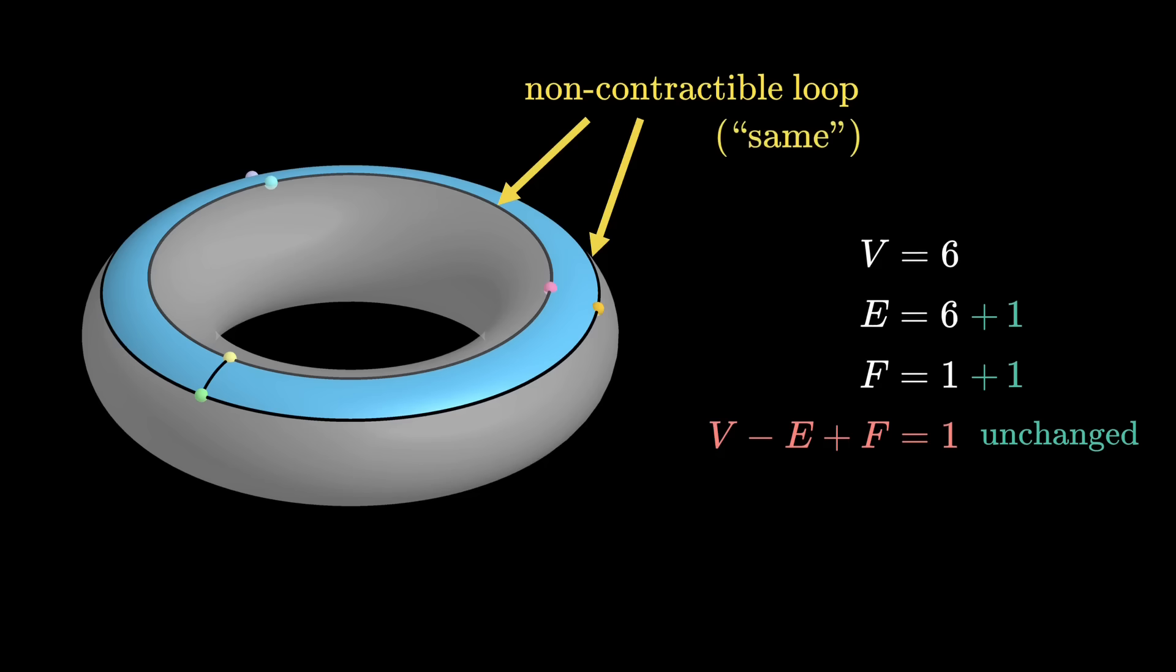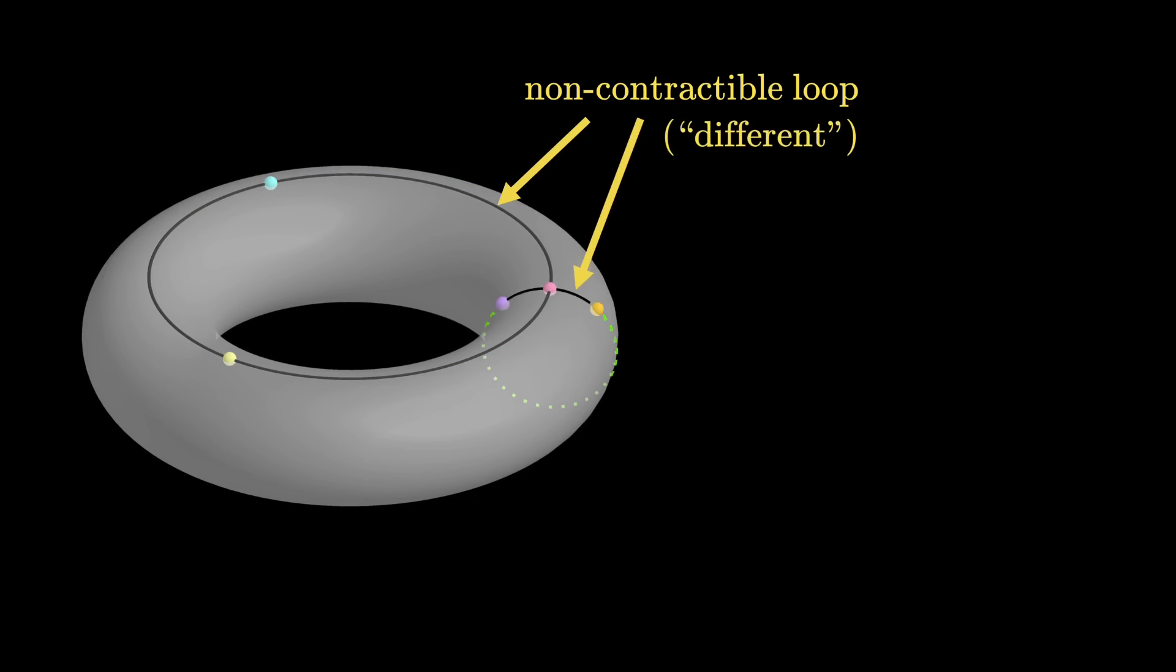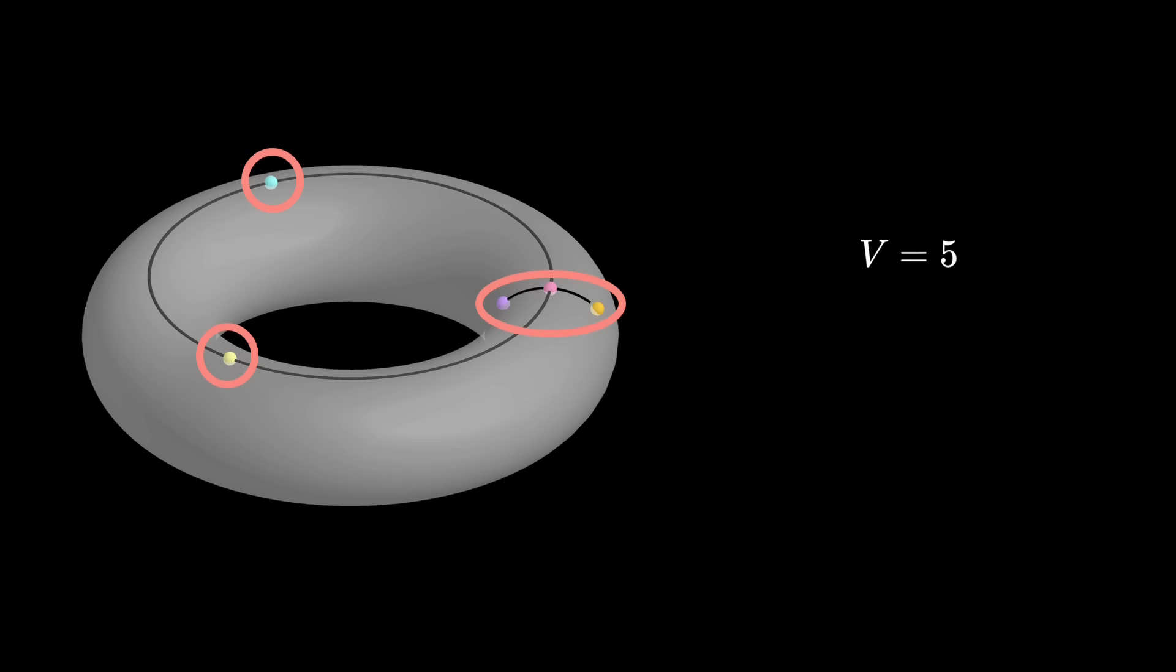But maybe that's because the two loops are kind of the same? What if the two non-contractable loops are genuinely different, so one of these loops can't be deformed to another? A more technical jargon for this is the two loops are not homotopic. Let's count V, E, and F before closing the second loop. There are altogether 5 vertices, so V is 5. For the edges, there are 3 on top that form a complete loop, and there are 2 that form an incomplete loop, so altogether, E is also 5. The whole torus is still one big continuous region, so F is 1, which means that V minus E plus F is equal to 1.